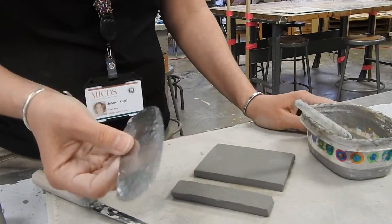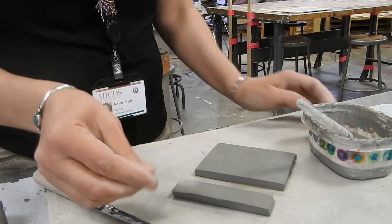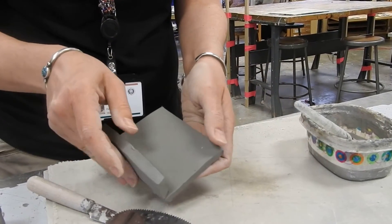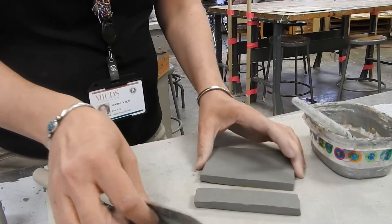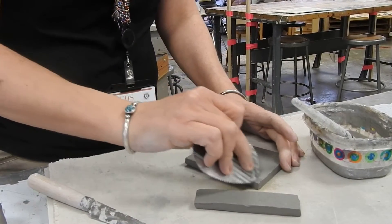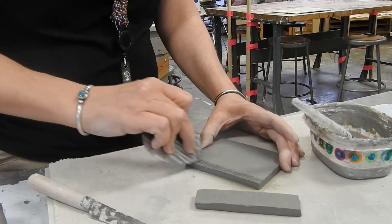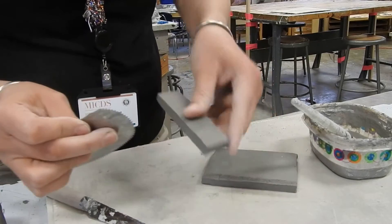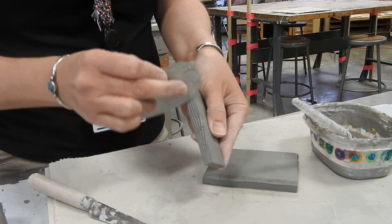Scoring literally means scoring. You're going to take a tool and scratch the clay. So for example, if I want to attach these two pieces together, I'm going to scratch with my scoring tool along this edge, and along this edge, the two places that I want to attach.